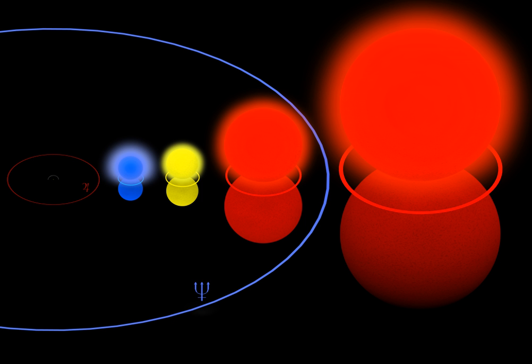Stars with an initial mass above about 25 solar masses quickly move away from the main sequence and increase somewhat in luminosity to become blue supergiants. They cool and enlarge at approximately constant luminosity to become a red supergiant, then contract and increase in temperature as the outer layers are blown away. They may bounce backwards and forwards executing one or more blue loops still at a fairly steady luminosity.